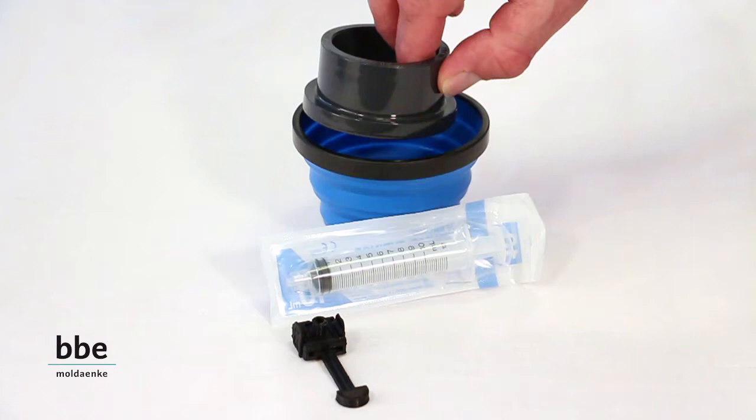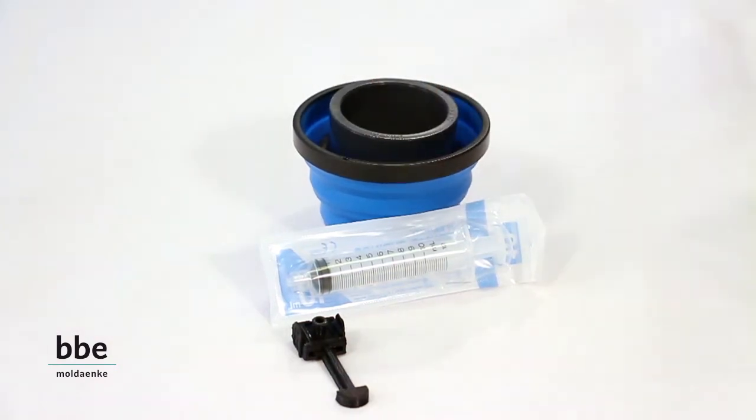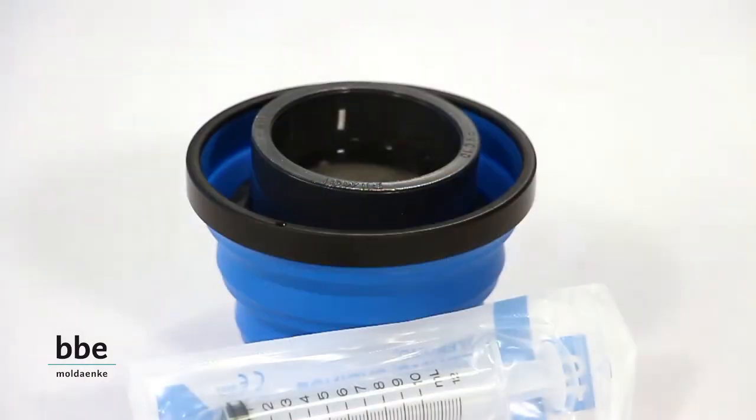To start with, take the ballast water sample and pre-filter the water sample into a cup. Use a 50 micron filter in accordance with the IMO-D2 norm.